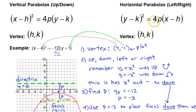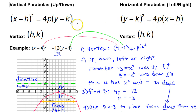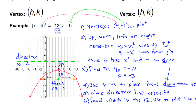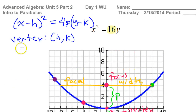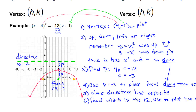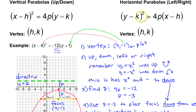These are the standard form equations for a parabola. If the vertex is (H, K), then you're either going to have (X − H)² = 4P(Y − K), or (Y − K)² = 4P(X − H). The difference is: if you have a normal vertical parabola, then X is going to be squared. If the Y is squared, then it's going to be a parabola that opens left or right — a sideways parabola.